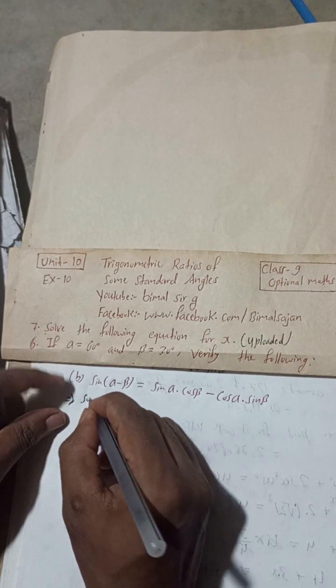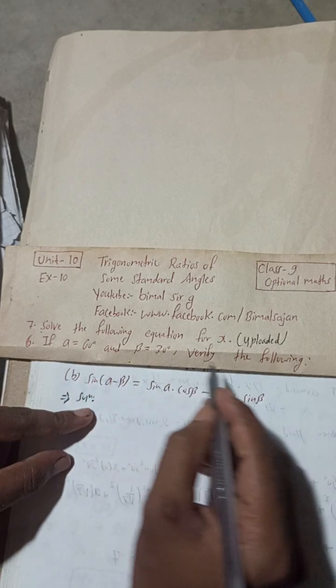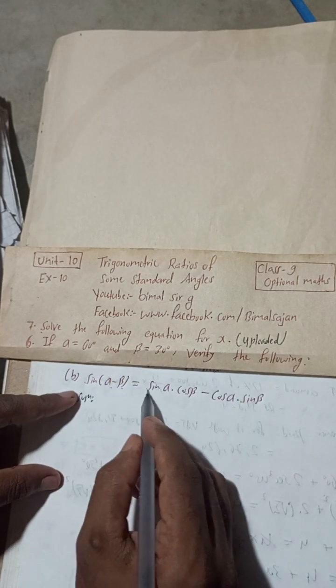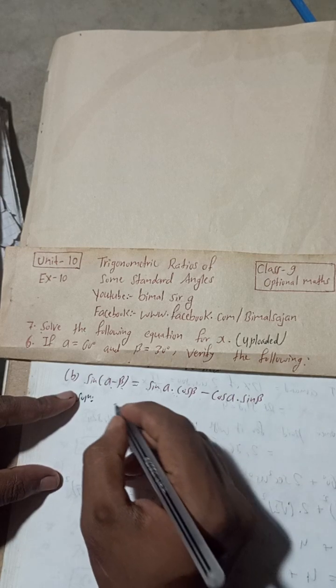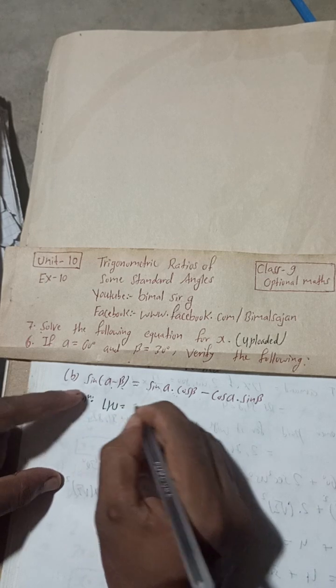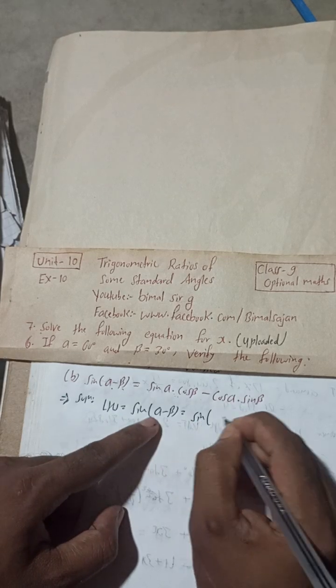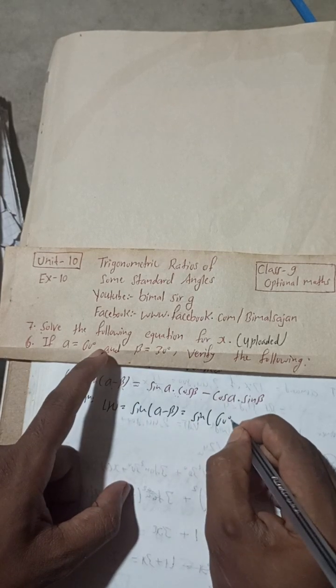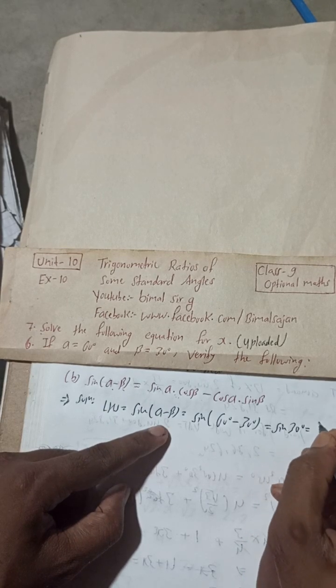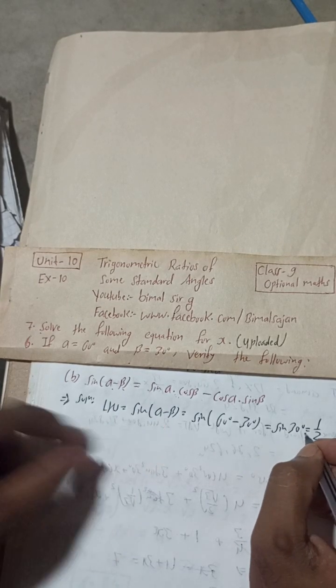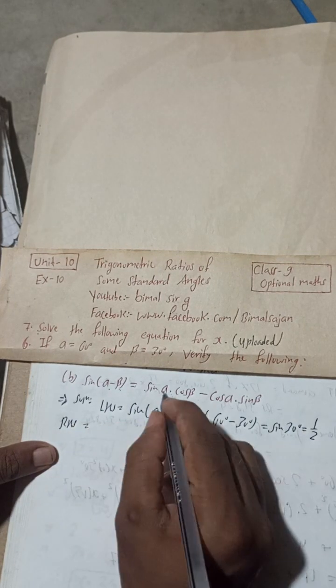We can now solve. Take LHS. Here, if alpha is equal to 60 degrees and beta is equal to 30 degrees, verify the following: sine(alpha minus beta) is equal to sine alpha cos beta minus cos alpha sin beta. So LHS is sine alpha minus beta, so sine 60 degrees minus 30 degrees. This is sine 30 degrees. Sine 30 degrees is 1 by 2. Now LHS part, RHS part.